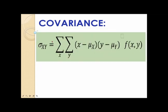If x and y are both discrete random variables, the formula for covariance is given by the double summation over x and over y of the quantity x minus mu of x times the quantity y minus mu of y times the joint probabilities f of x, y.